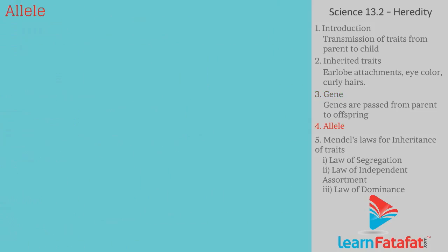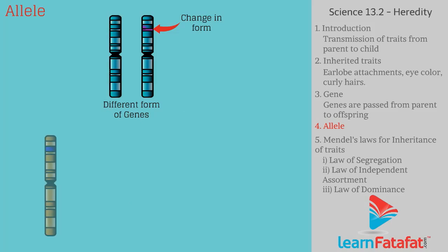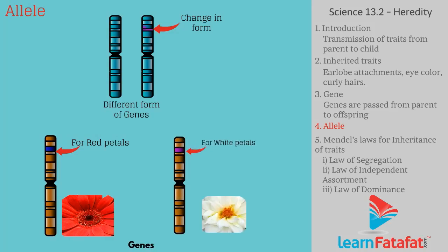Allele: An organism's population may have different forms of the same gene, called alleles. For example, the gene that gives red color to petals and the gene that gives white color to petals of a flowering plant are alleles.